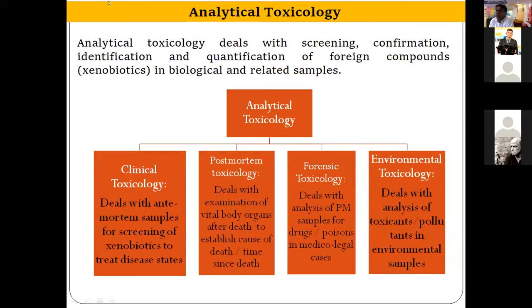Regarding the nature of samples we analyze in analytical toxicology — these can be divided into ante-mortem samples and post-mortem samples. If the person has consumed any drug or poison and is still alive, we can collect biological fluids like blood, plasma, serum, urine, saliva, and gastric lavage. Keratinous tissue samples like hair and nail are also important. In case of post-mortem samples, we collect tissue samples like stomach, lung, liver, kidney, spleen, and brain — these are known as visceral samples. Biofluid samples like blood, urine, and vitreous humor, as well as cerebrospinal fluids, can also be collected depending on availability. In most cases, urine samples are not available, so blood samples are generally sent for analysis.